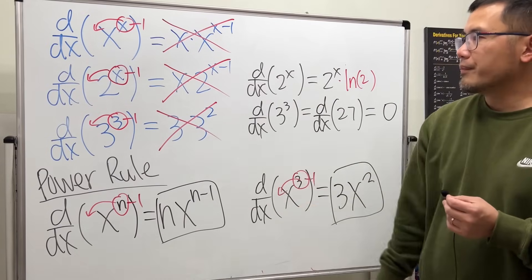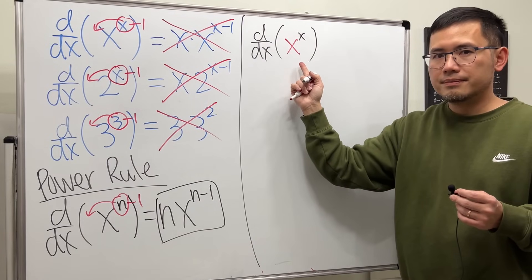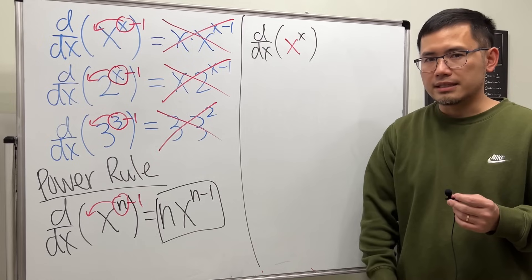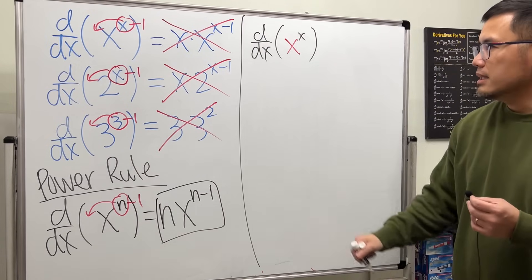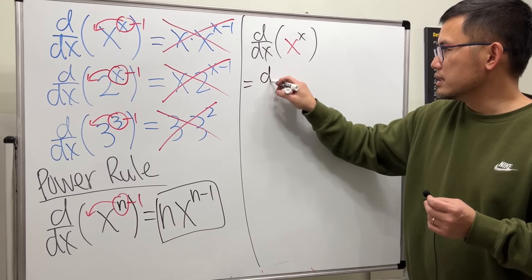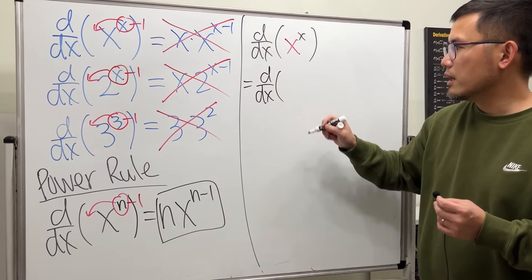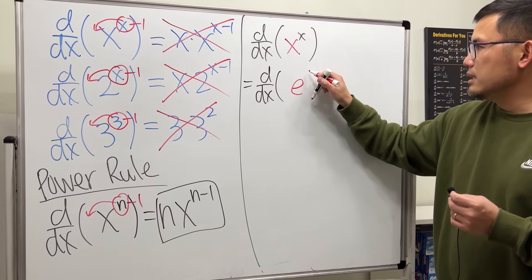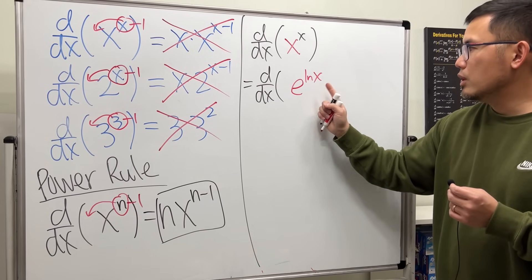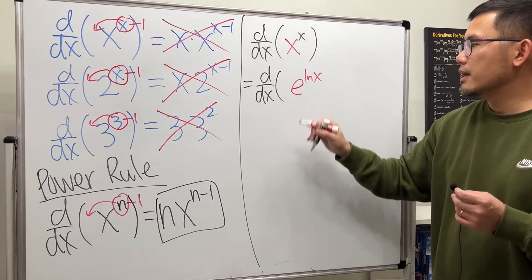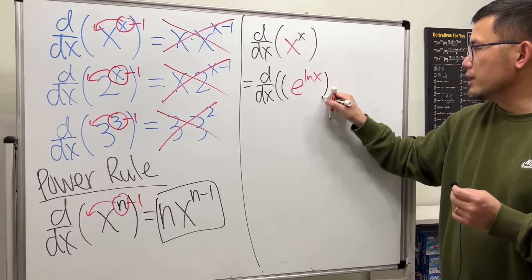The last one right here, let's focus on the base x. We don't like to have base x in calculus. We like to have base e. So what we can do is, we can say this is taking the derivative of, let's write this as e to the lnx. Because e and ln cancel, we still get the x back. And then raise that to the x power.